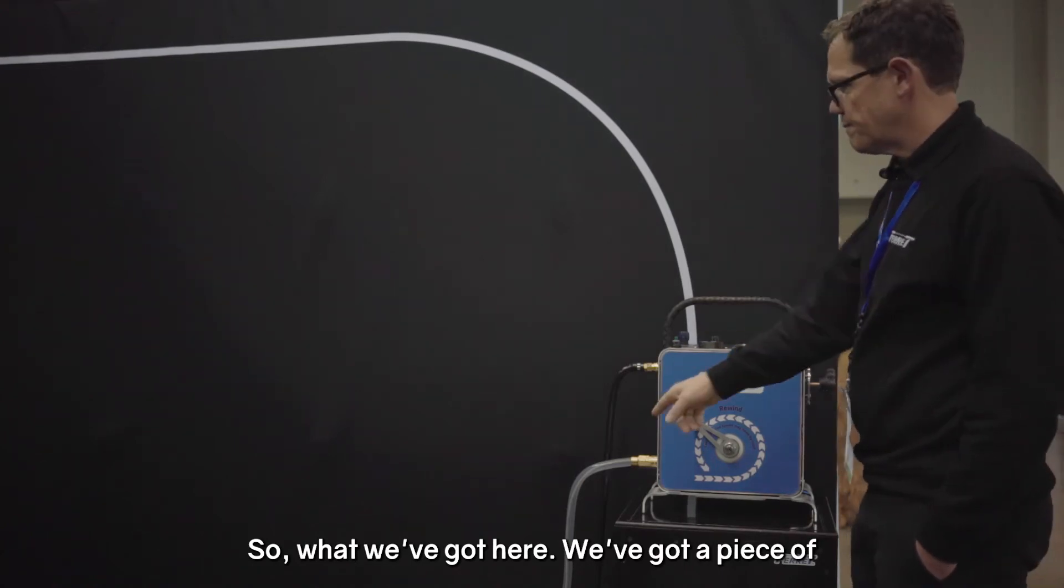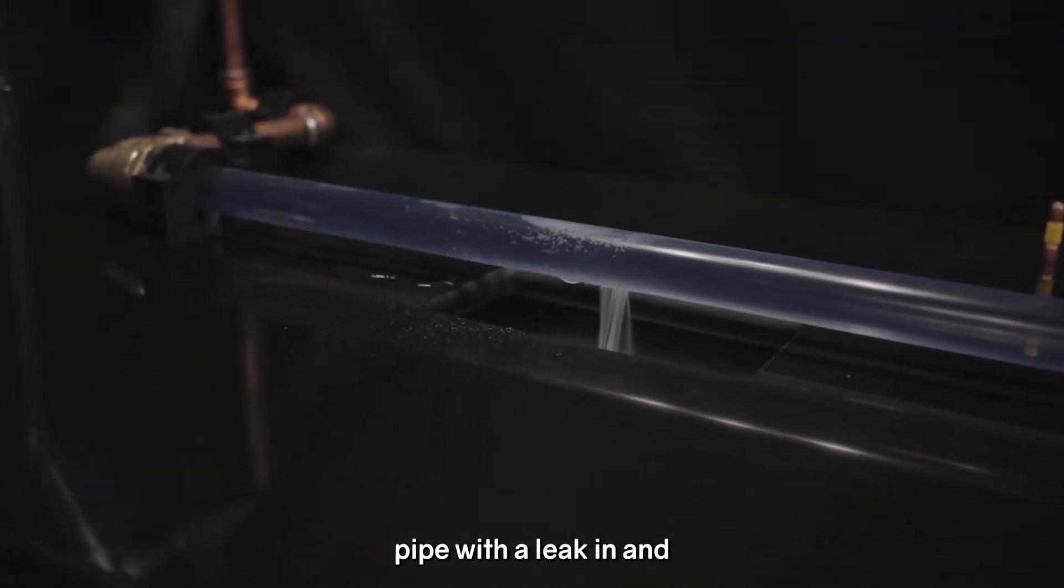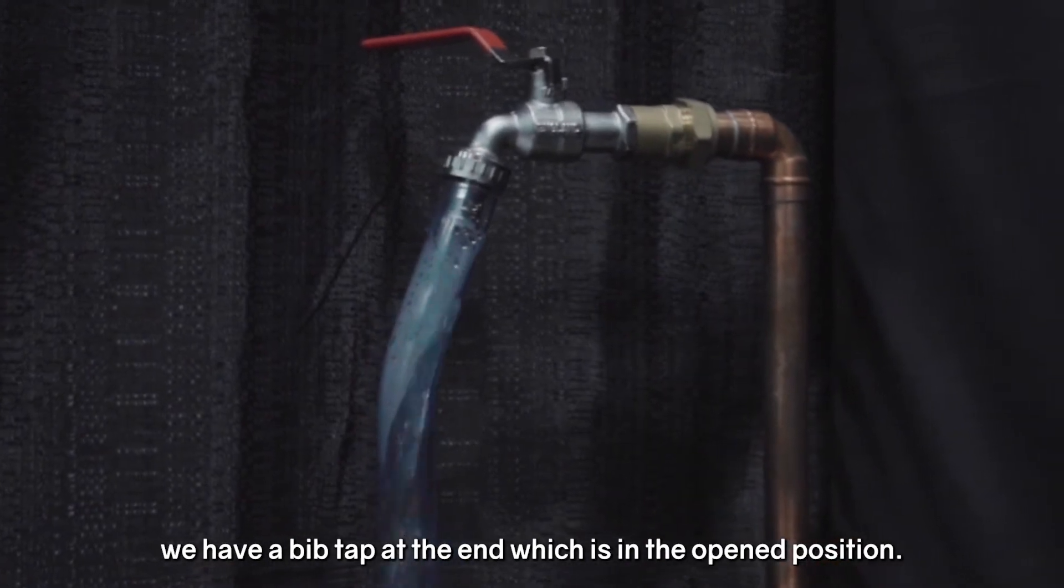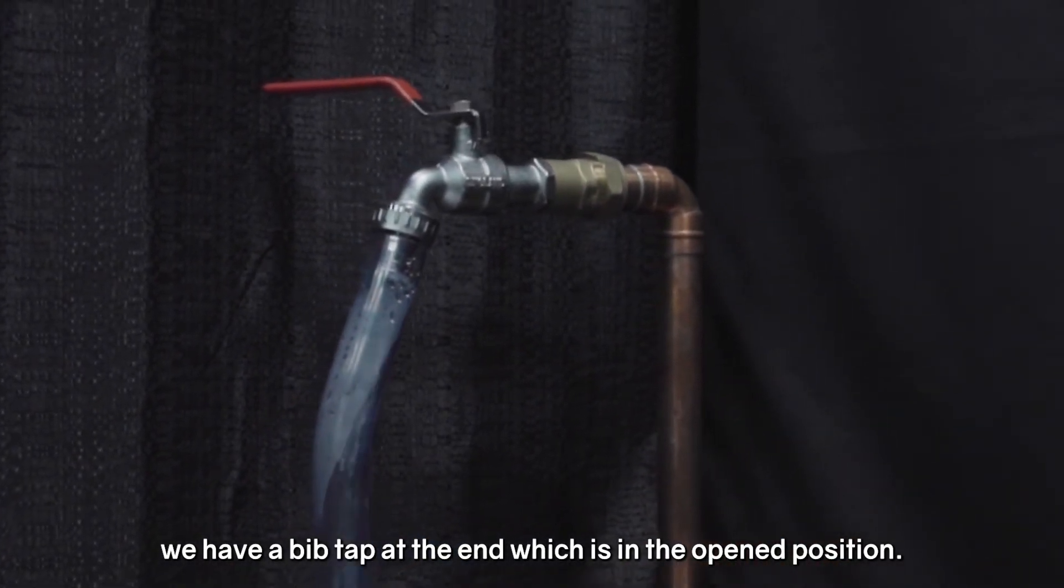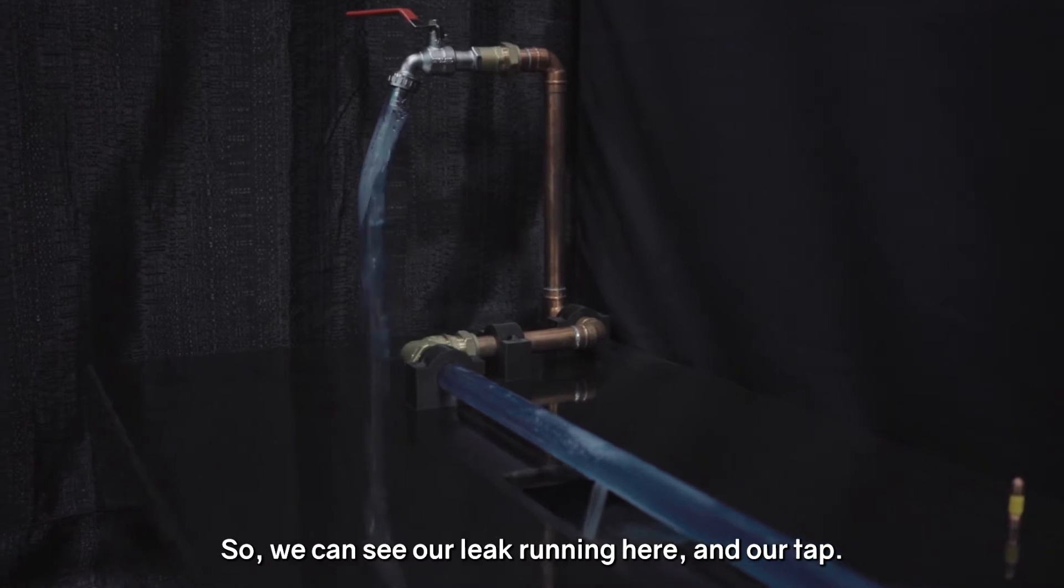So what we've got here, we've got a piece of pipe with a leak in and we have a bib tap at the end which is in the open position. So we can see our leak running here and our tap.